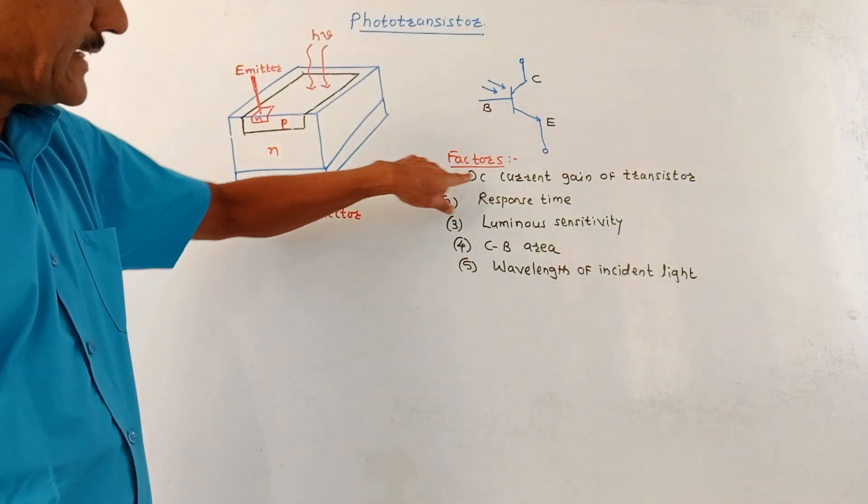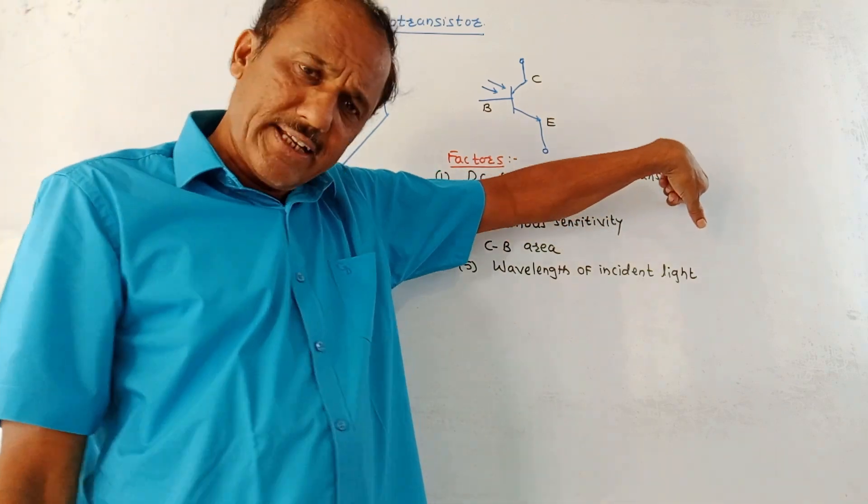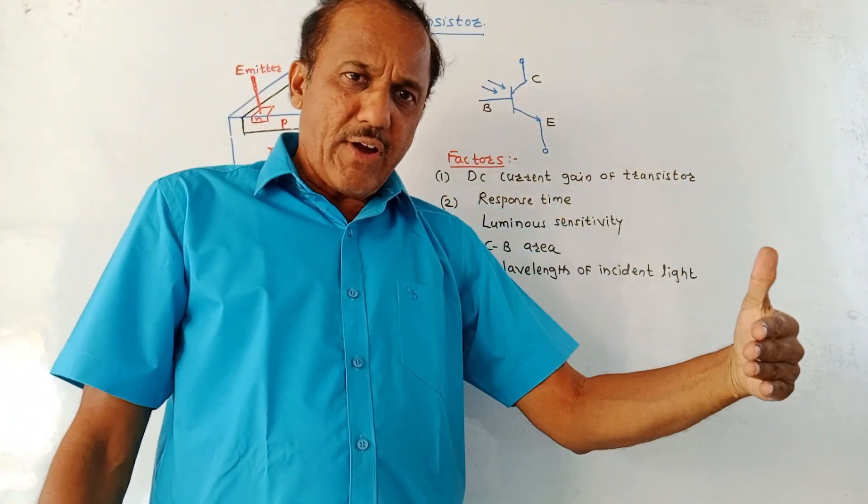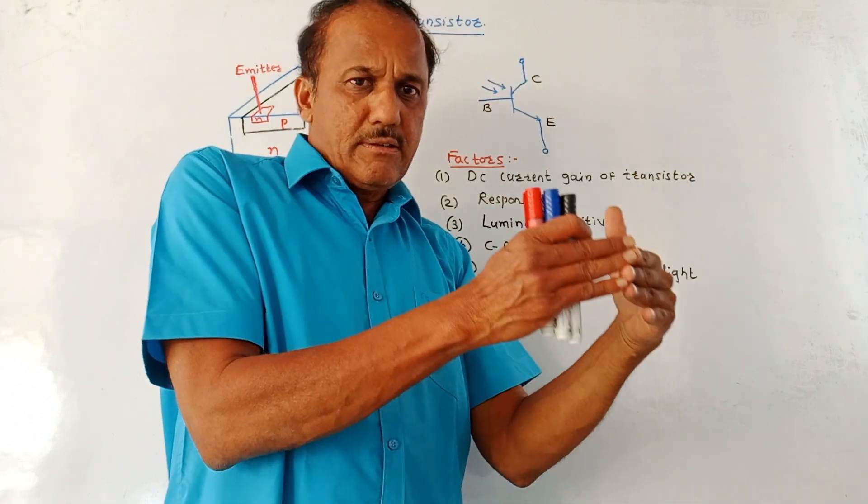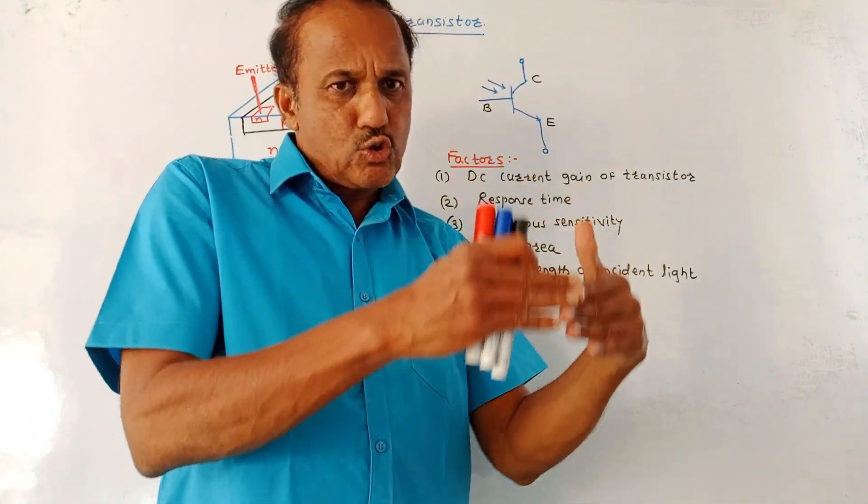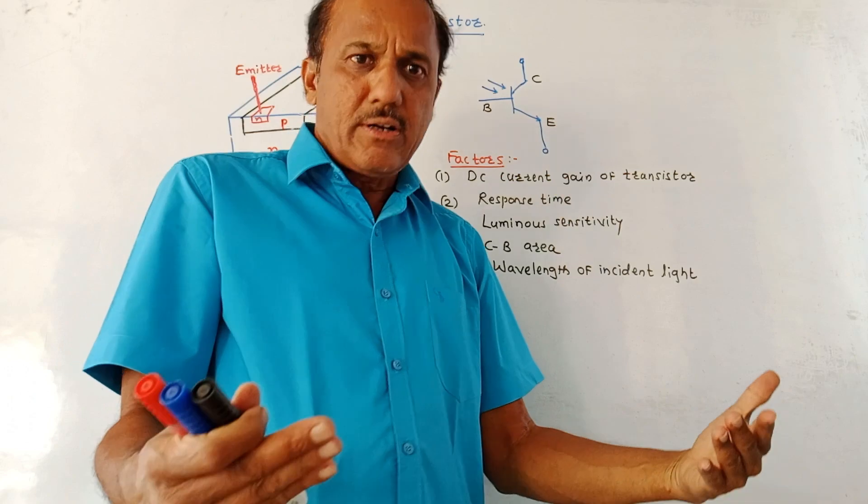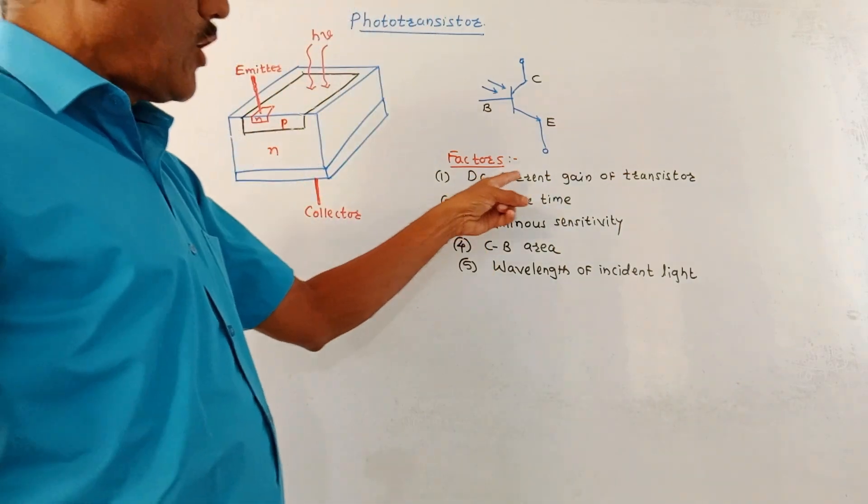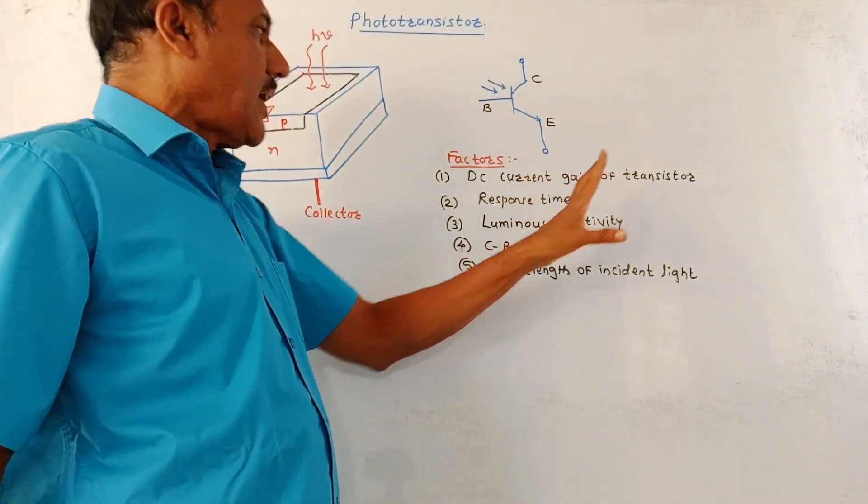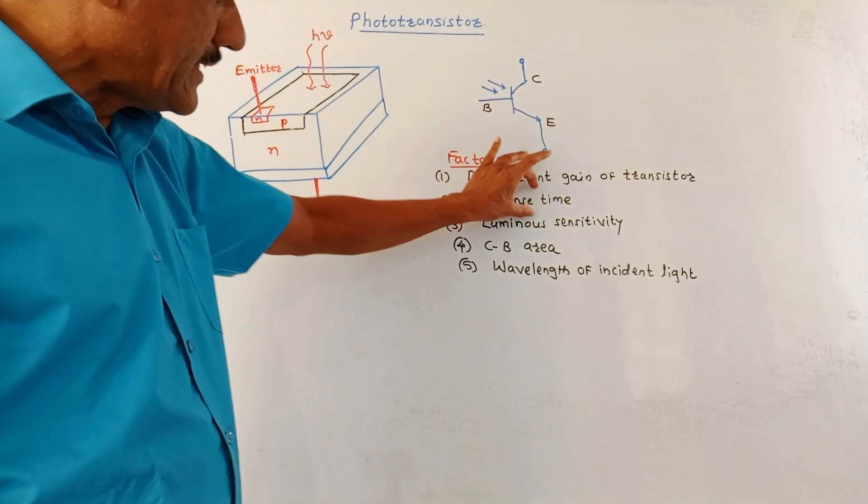First factor is DC current gain of a transistor. As the name indicates, the gain factor amplifies the incoming signal, so you are getting the amplified output current. That means amplified photon current at the output. Second factor is the response time.